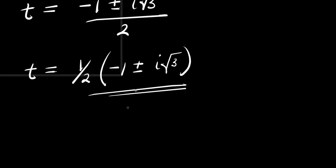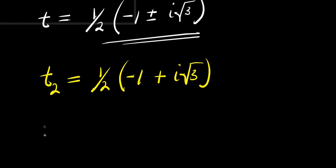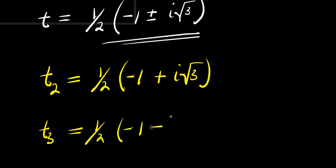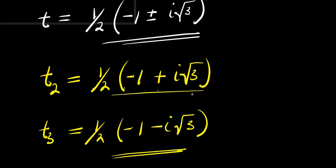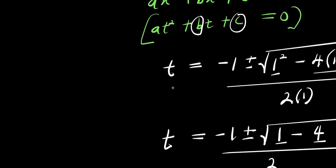Now this will give us two complex values. I can have t2 — since we already have our t1 — this is (1/2)(negative 1 plus i root 3). And also I can have my t3, which equals (1/2)(negative 1 minus i times root 3). So these are the two complex values, and we have one real value, which is 1.